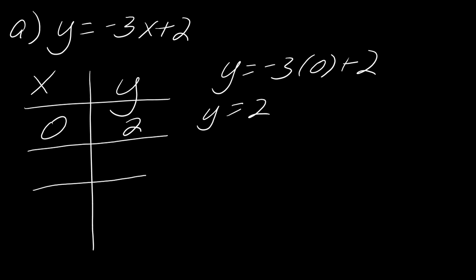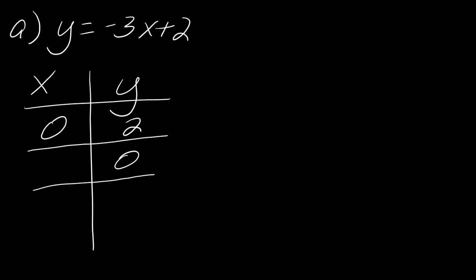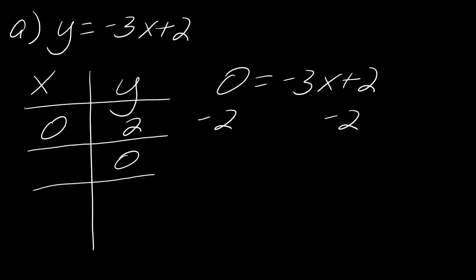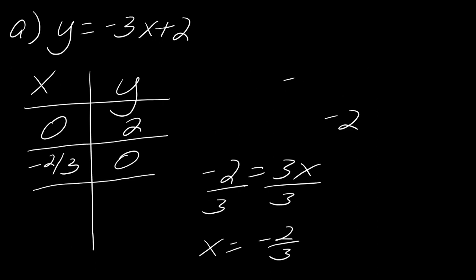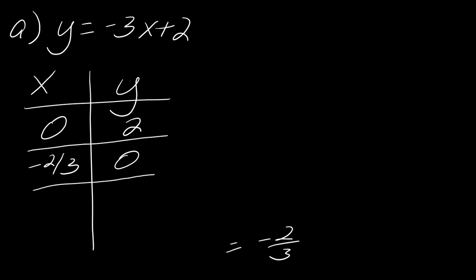If you wanted to, you could also plug in 0 for y. So 0 = −3x + 2. Solving, I get −2 = 3x, then divide by 3 to get x = −2/3. Keep in mind that means you'd have to graph that fractional point. If you don't like the point you found, you can always just choose a fourth point instead to make it easier to graph.